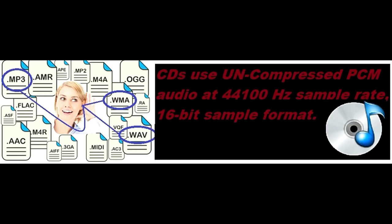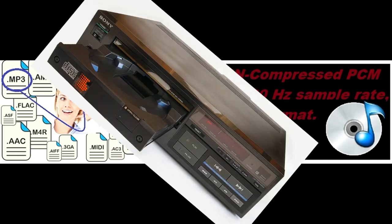Let's start with a reference point: CDs and CD quality, which we're all familiar with. CDs use uncompressed pulse-code modulation with a 44.1 kHz sample rate and 16-bit resolution. CDs can sound great, and this format has been around since the 1980s.